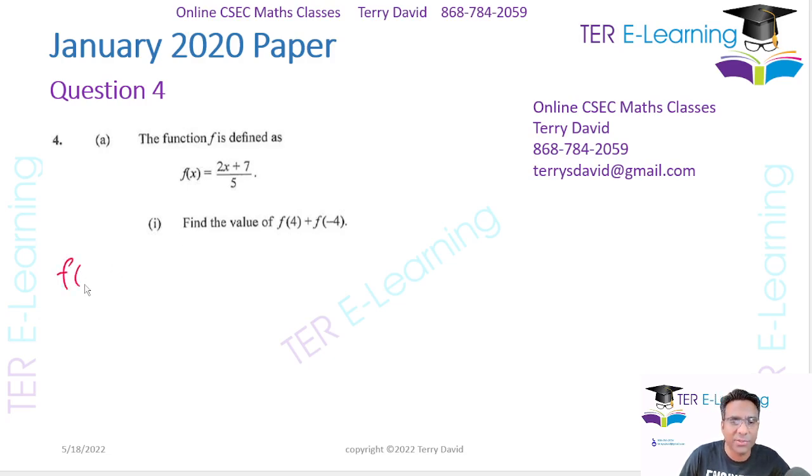So first thing we need to do, we need to find f of 4. So that's going to be 2 multiplied by 4 plus 7 over 5. So that's 8 plus 7 over 5, 15 over 5, and that's going to give me 3.